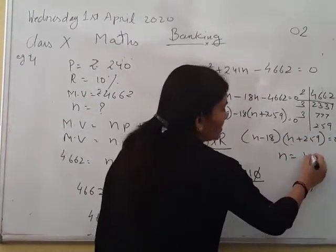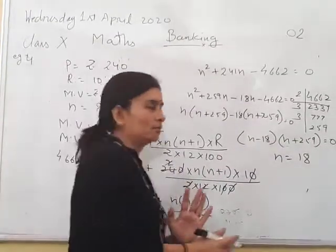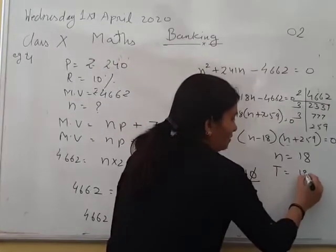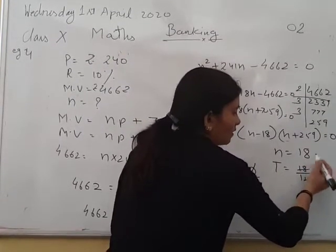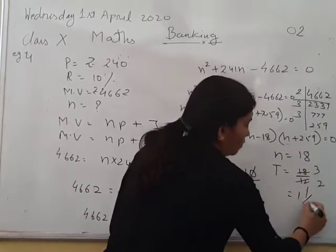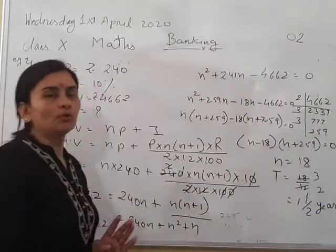So the value of N is coming 18. It means the number of installments is 18. We will convert into years now. 18 by 12, it is 3. 6 eighteens are 18, 6 twelves are 12. 1 whole 1 by 2 years.